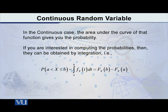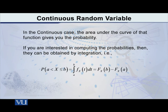The area under the curve of that function gives you the probability. If you are interested in computing the probability that your random variable X lies between two numbers A and B, then you integrate small f of X from A to B. This equals capital F of B minus capital F of A, using the cumulative distribution function.